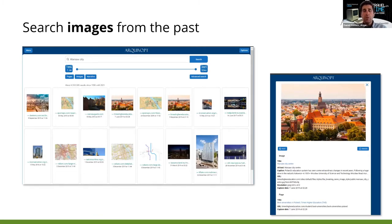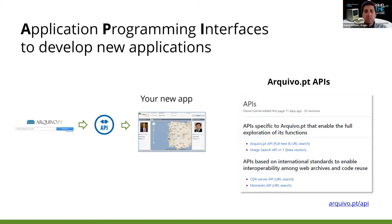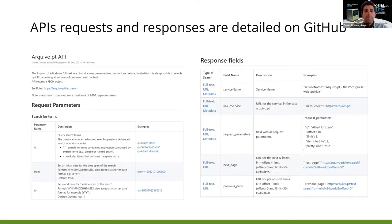You can also search images from the past by entering keywords and getting related images. All of this is available for automatic processing, which is the focus of our lesson. Anyone can use our application programming interfaces — we have four APIs, two specific to Archivo.pt features and two based on international standards to allow software reuse and interoperability.